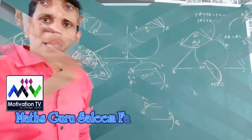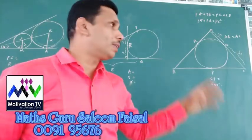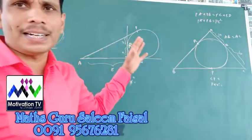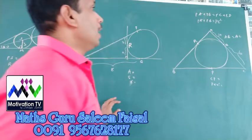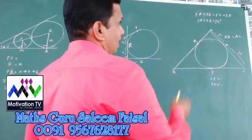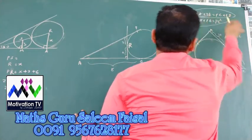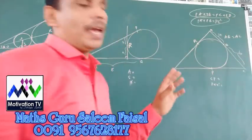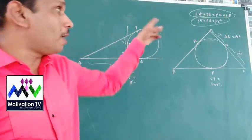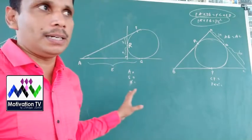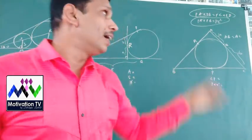I think it's tough in this chapter — it's not so tough, it's very simple. Now we are going to talk about this question: PA into PB equals PC into PD, and PA into PB equals PC squared. This type of question is related to 2nd degree.